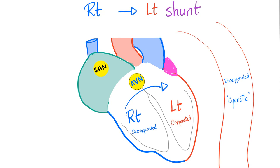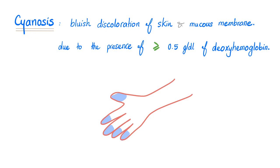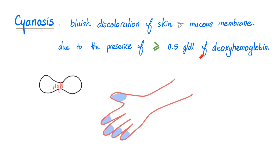Why is right-to-left shunt cyanotic? The left side contains oxygenated blood — it just came from the lung. The right side contains deoxygenated blood from the rest of the body. With right-to-left shunt, deoxygenated blood goes to the left side, ends up in the aorta, brain, skin, and every organ — that is why it is cyanotic. Cyanosis is bluish discoloration of skin and mucous membranes due to more than 0.5 grams per deciliter of deoxyhemoglobin, which we measure in the capillary blood.